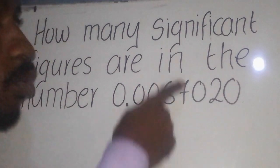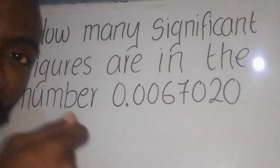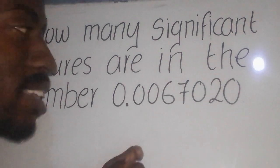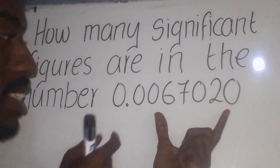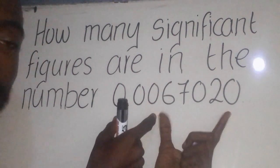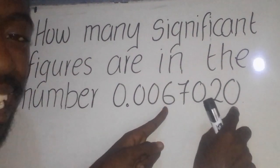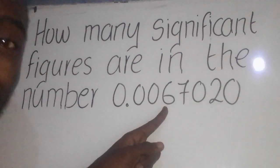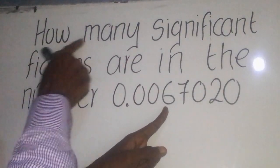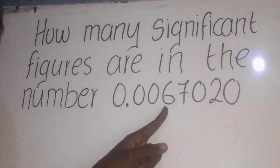Now following the rules of significant figures, which says when you are given a number starting with zeros, then the zeros in between and at the end of a given number are significant figures. Since they say how many, we need to count.